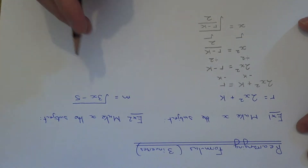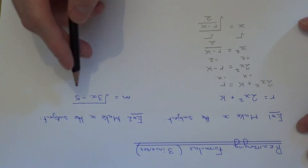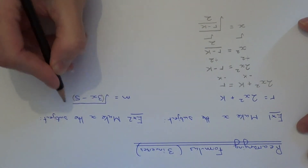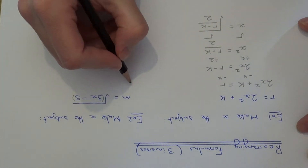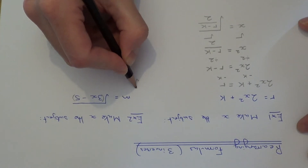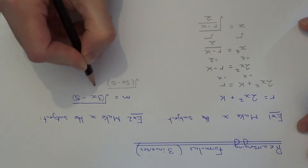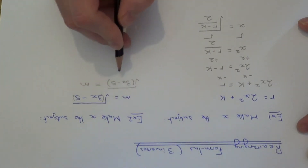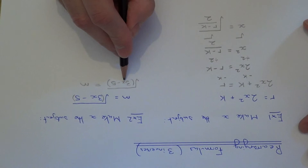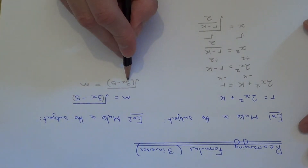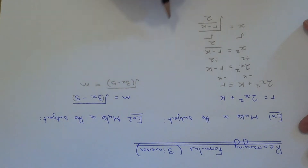Let's move on to example 2. This time we've got m equals the square root of 3x minus 5. Again, let's swap the left-hand side and the right-hand side over. If we have a look at what's happening to x on the left-hand side: first of all it's being multiplied by 3, then we're taking away 5, and then it's being square rooted. So we need to do the inverse operations in reverse order.